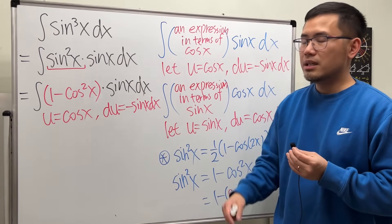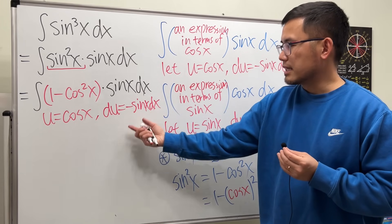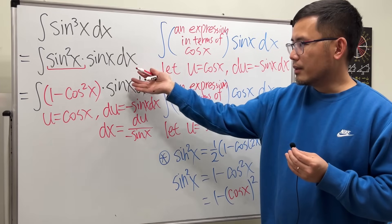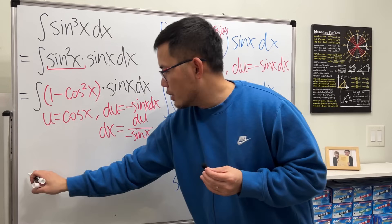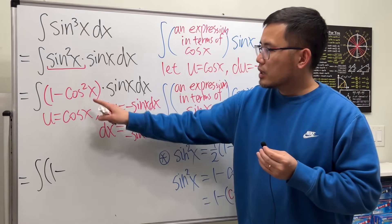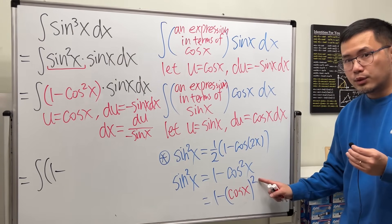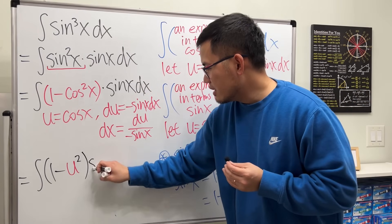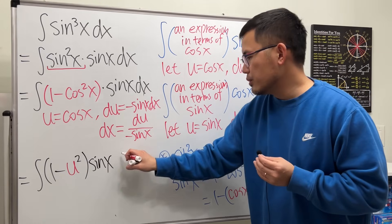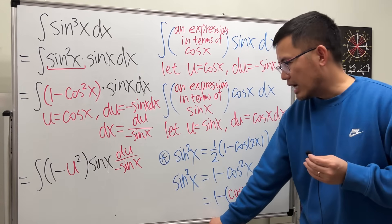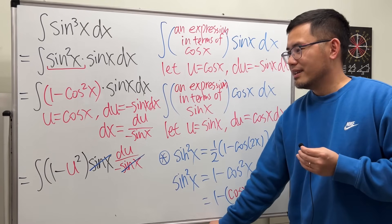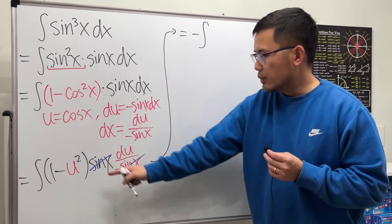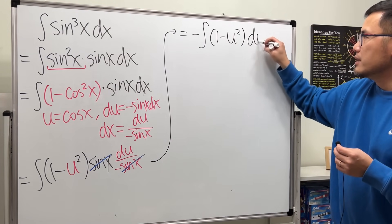Dividing both sides by negative sine x, we have dx equal to du over negative sine x. Taking the integral from the x-world to the u-world: one minus cosine squared x becomes one minus u squared, and then sine x dx becomes sine x times du over negative sine x. The sine x cancels, leaving us with the negative integral of one minus u squared du.